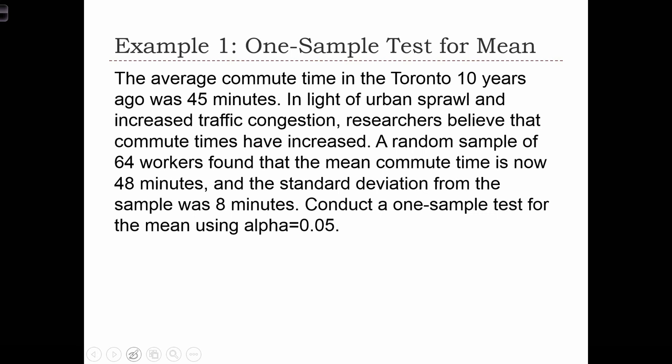A random sample of 64 workers found that the mean commute time is now 48 minutes, and the standard deviation from the sample was 8 minutes. Conduct a one-sample test for the mean using alpha equals 0.05.